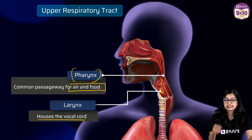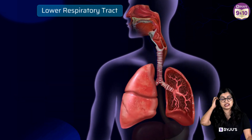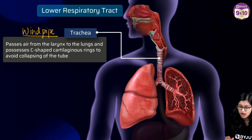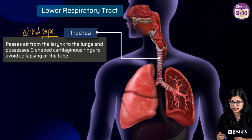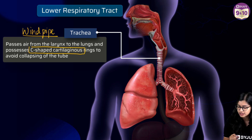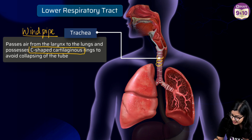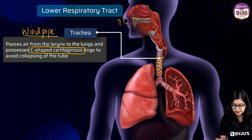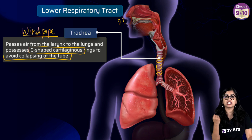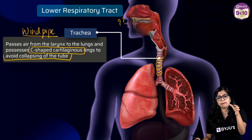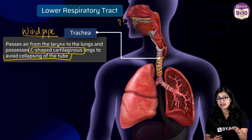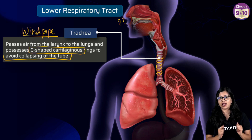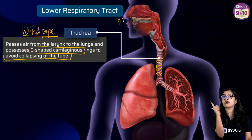From the larynx, air descends into the next part, which is the trachea — very popularly known as the windpipe. The trachea is protected by C-shaped cartilage rings. These incomplete C-shaped cartilage rings prevent the tube from collapsing and keep it sturdy. The reason they are incomplete and C-shaped is that right behind the trachea we have the food pipe, the esophagus, which is why we have incomplete rings and not full rings.